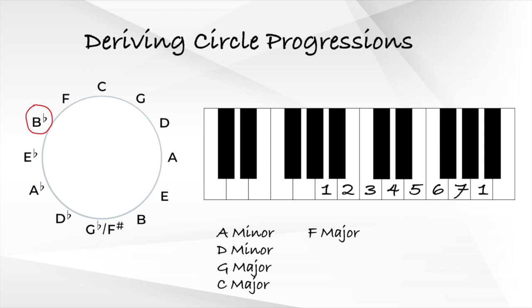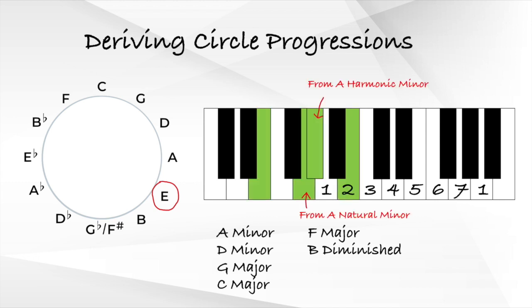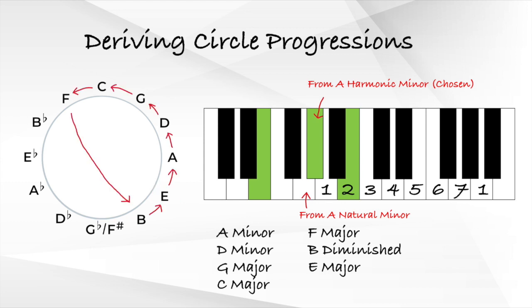Based on the original circle of fifths, the next note that comes after F should be a Bb. However, as we are following the diatonic circle of fifths instead, and Bb is not in the A minor key, we replace the note Bb with a B instead. Using the notes in the A minor key to construct a chord, we naturally get a B diminished chord. From B, moving down the circle of fifths once more, we get the note E, then A again. As we are using both the A natural minor scale and the A harmonic minor scale, both E major and E minor are possible candidates. However, the E major chord seems to have a stronger turnaround sound to go back to A minor, so we use the E major chord instead of the E minor chord. And there we have the seven chords based on the diatonic circle of fifths.